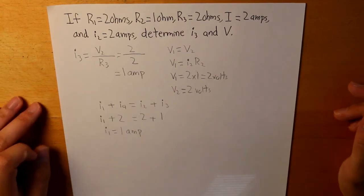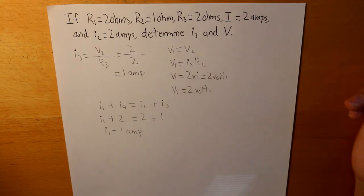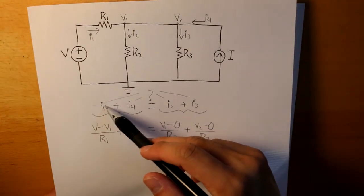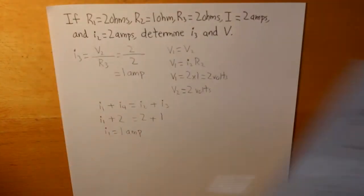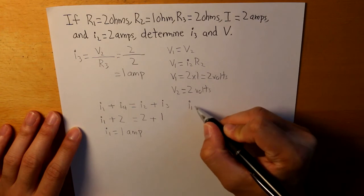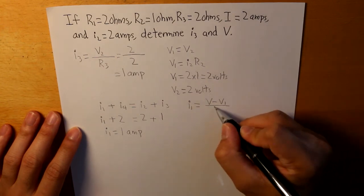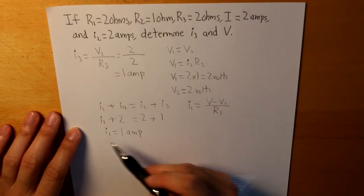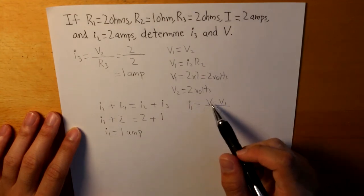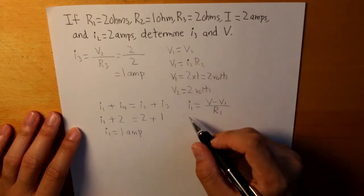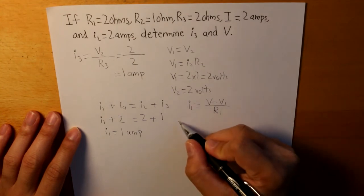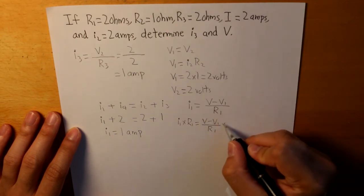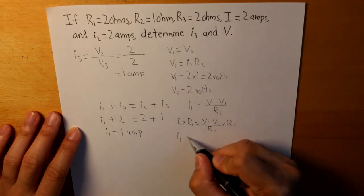Now, since we're given what the value of I1 is, then how does I1 relate to V? Well, what we do know previously is that I1 is equal to V minus V1 divided by R1. And since we already know what V1 and R1 is, and we just solved for I1, then we can isolate these three variables on one side to determine what our voltage source is. So let's multiply both sides by R1 to get rid of R1 in the denominator in the right side.